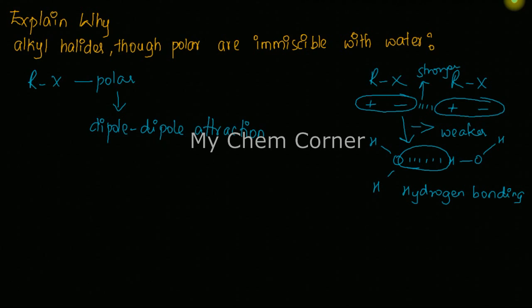Alkyl halides, though polar in nature, are immiscible in water due to weaker bond formation between an alkyl halide and water. The alkyl halides do not have sufficient strength to break the hydrogen bonding between water molecules, therefore they are immiscible in water even though they are polar in nature.